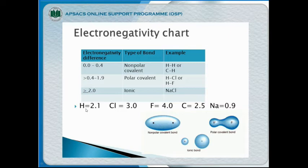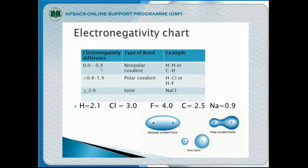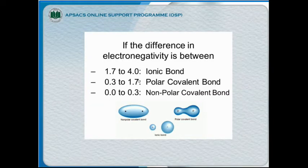For H₂, the electronegativity difference is 0. For a C–H bond, carbon has 2.5 and hydrogen has 2.1, giving a difference of 0.4, which is less than 1.7, so it is a polar covalent bond. From 1.7 to 4, it will be pure ionic; from 0.3 to 1.7, polar covalent; and from 0.0 to 0.3, non-polar covalent bond.